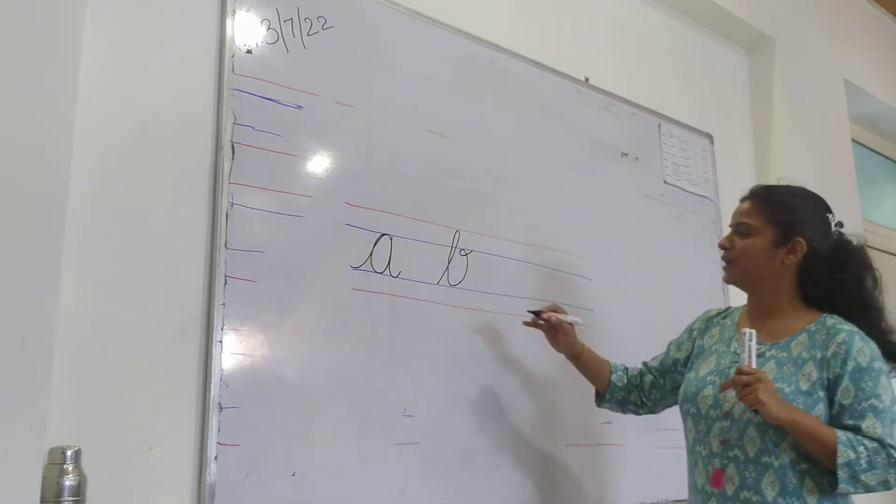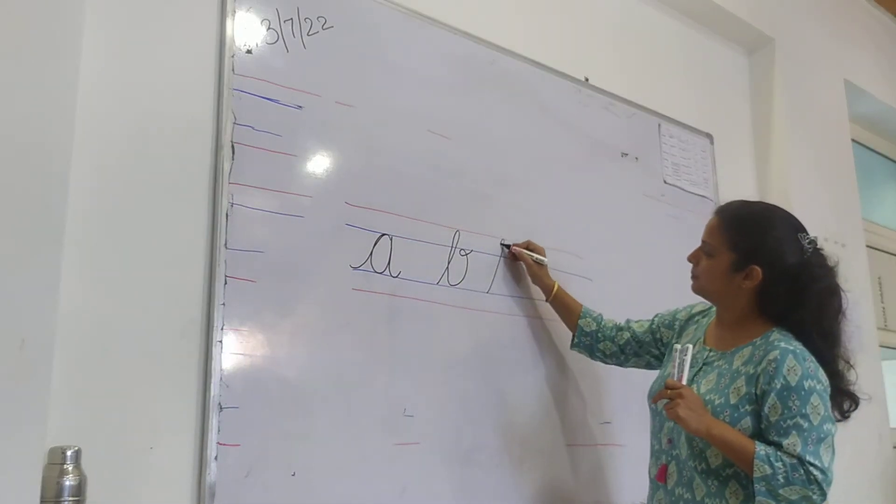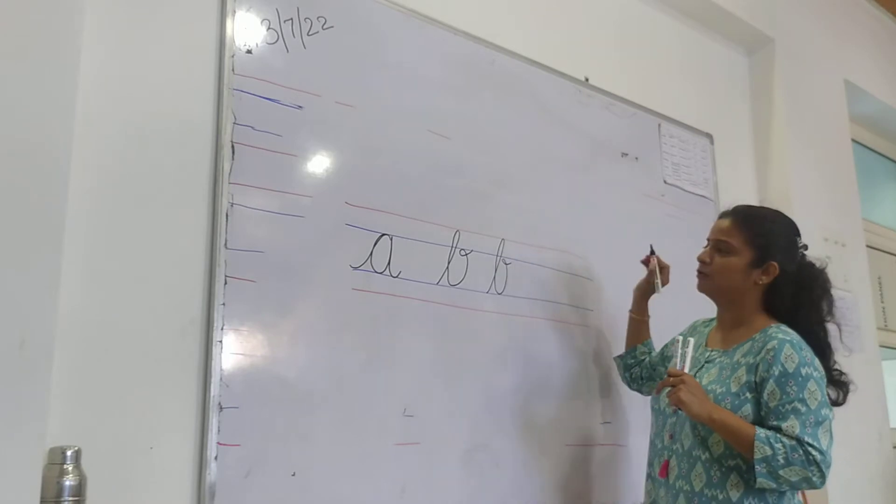Okay, how do we write B? Up, down, up, out.